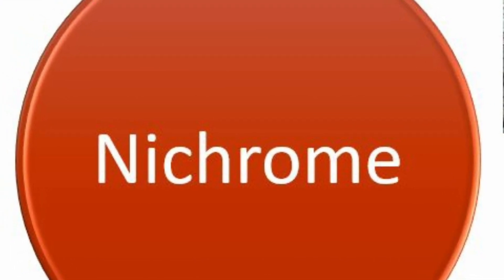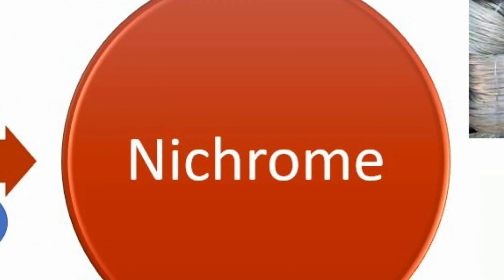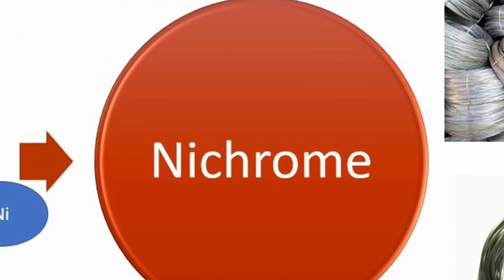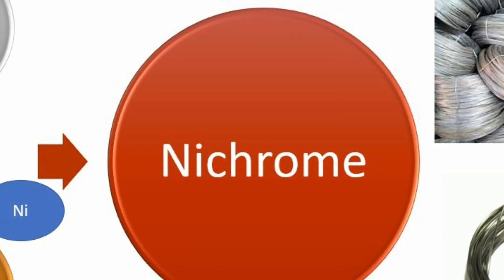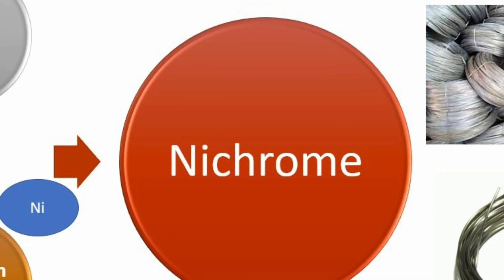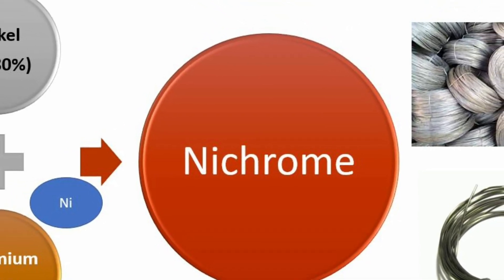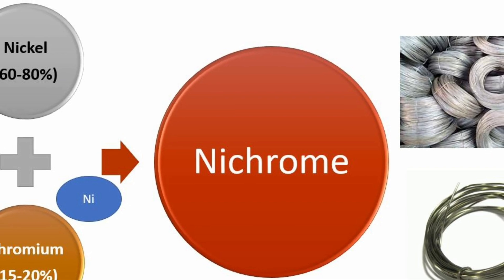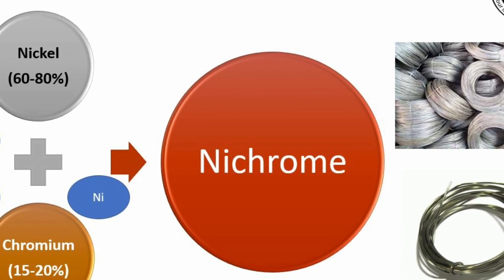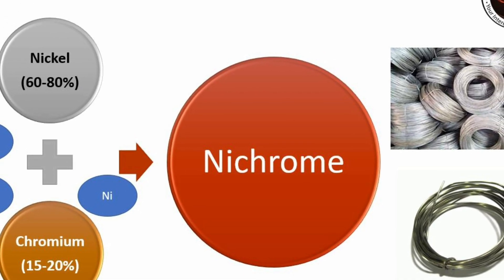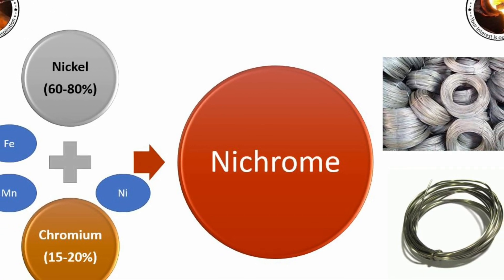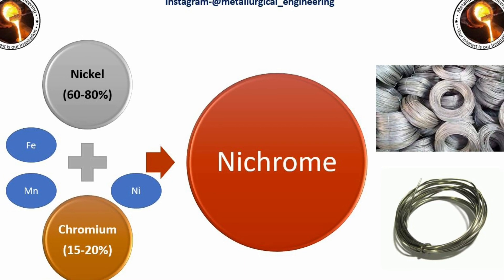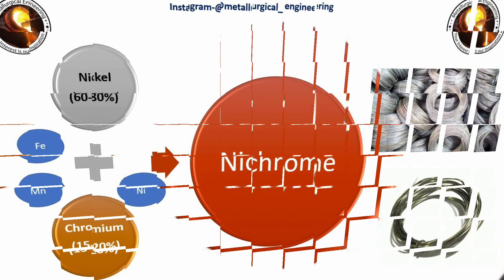Next is nichrome. It is a nickel-based alloy and chromium is the main alloying element. Other alloying elements are iron, manganese, and silicon. The composition of nichrome is 60 to 80 percent nickel and 15 to 20 percent chromium. It is used in electric heaters and foam cutters.